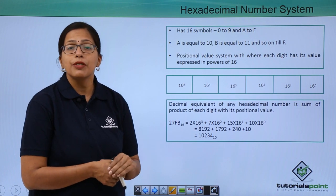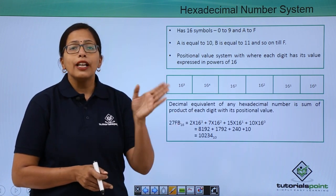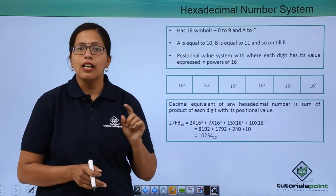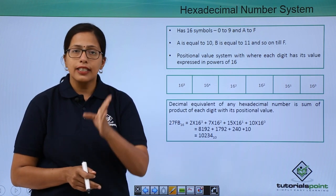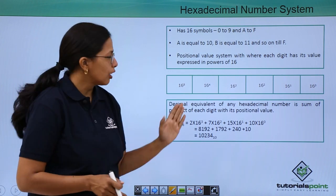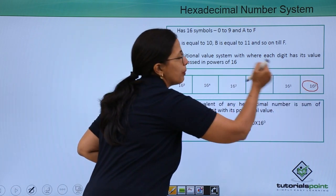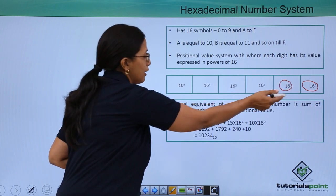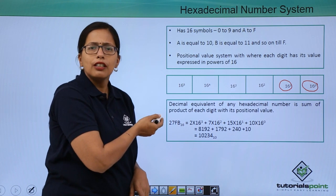Again, hexadecimal number system is a positional value system. What does that mean? That the value of any digit will depend upon its position. As there are 16 digits, the value will be calculated 16 to the power of the position. Again, I will start from the rightmost place and it will be 16 to the power of 0, then 16 to the power of 1 and it will proceed similarly to whatever is the last digit.